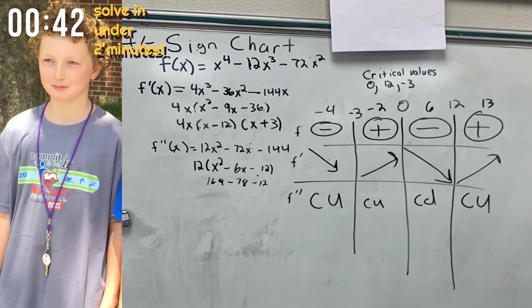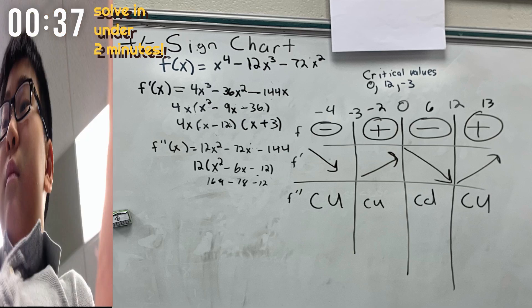That leaves you with x squared minus 9x minus 36. You must find the simple factors of this equation, which is 4x parentheses x minus 12 x plus 3. After finding the first derivative, you now want to find the second derivative of the equation.